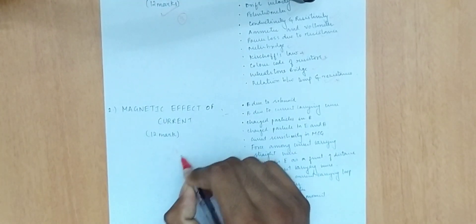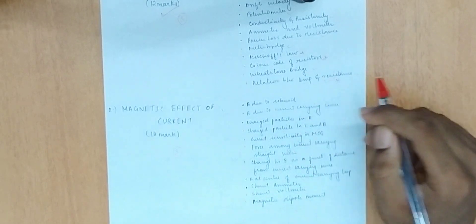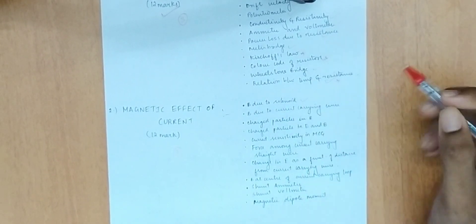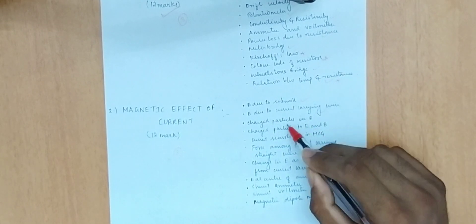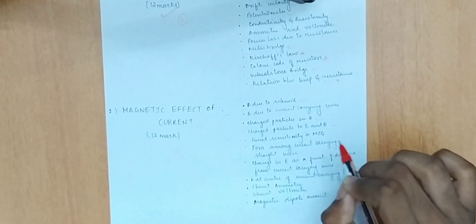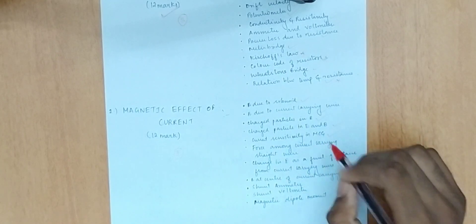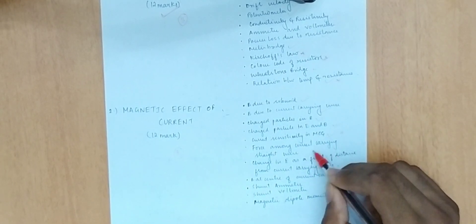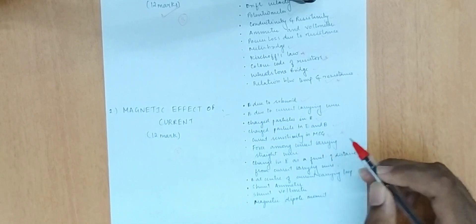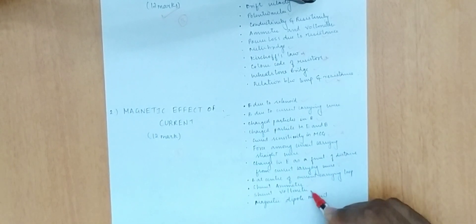For the magnetic effect of current, important topics are magnetic field due to a solenoid, magnetic field due to a current-carrying wire, charged particles in electric and magnetic fields, moving coil galvanometer and current sensitivity, force between current-carrying straight wires, magnetic field at the center of a current-carrying loop, shunt and voltmeter, and magnetic dipole moment.